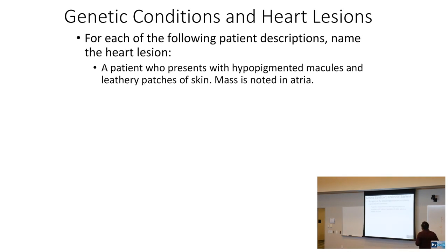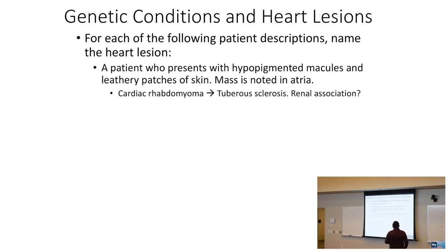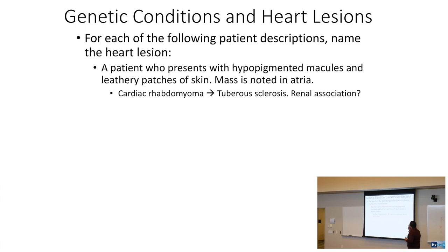A patient who presents with hypopigmented macules and leathery patches of skin, with a mass noted in the atria. Hypopigmented macules are related to tuberous sclerosis. Tuberous sclerosis causes ash leaf spots and also shagreen patches, described as leathery patches of skin. The heart lesion related to tuberous sclerosis is the cardiac rhabdomyoma — that's the primary cardiac oncological lesion for tuberous sclerosis.